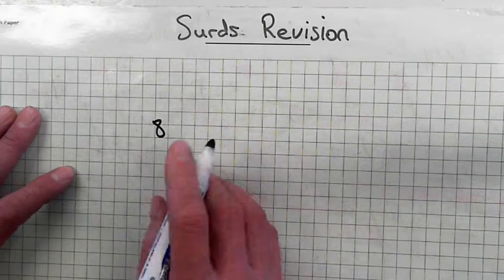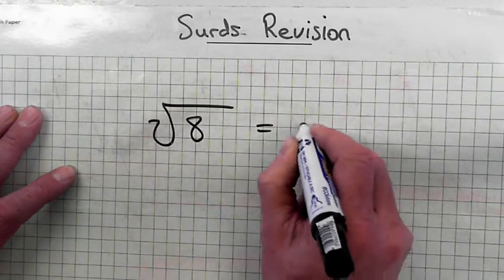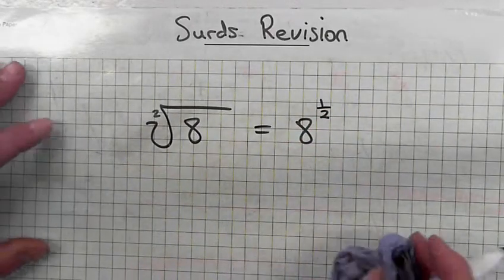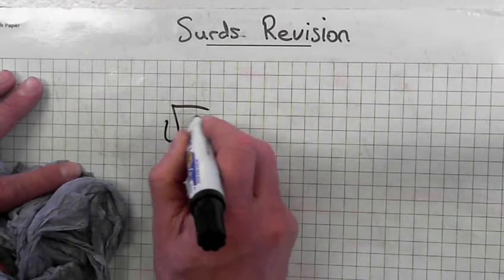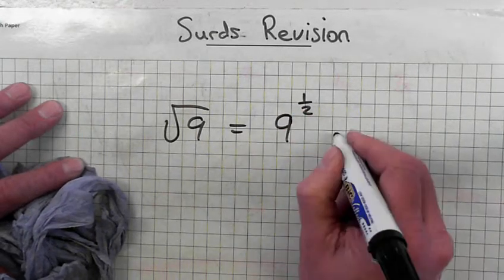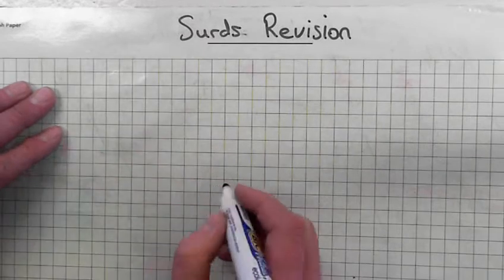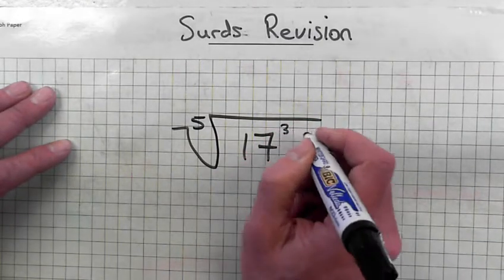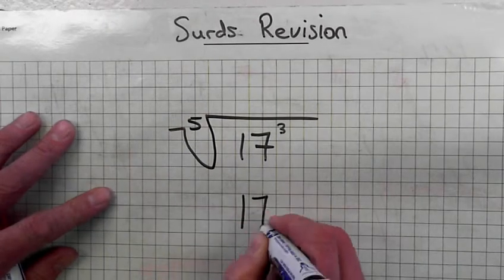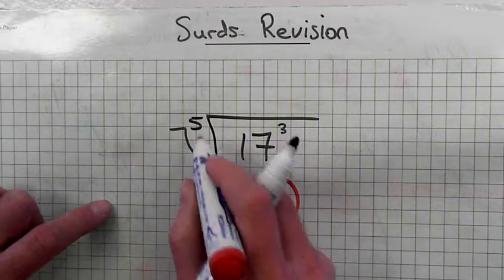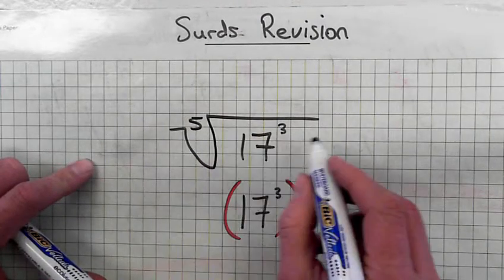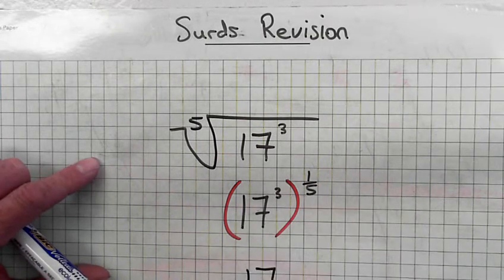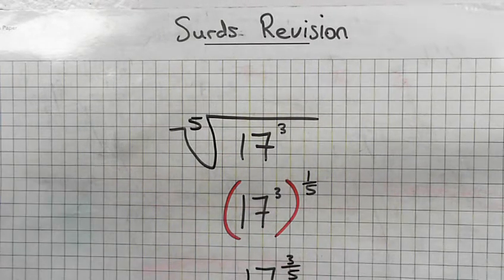Another example. The square root of eight — there's an invisible two — so eight to the power of a half is the answer. Similarly, the square root of nine is nine to the power of a half. Another example: the fifth root of seventeen to the power of three. We write seventeen to the power of three in brackets. The fifth root means the power of one-fifth. So we multiply three times one-fifth, which gives three-fifths. The answer is seventeen to the power of three-fifths.